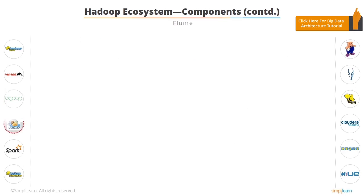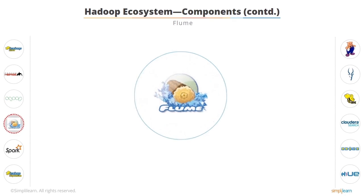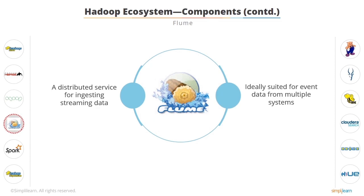If you want to ingest event data — such as streaming data, sensor data, or log files — then you can use Flume. Flume is a distributed service that collects event data and transfers it to HDFS. It is ideally suited for event data from multiple systems.